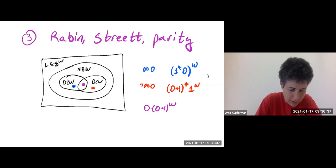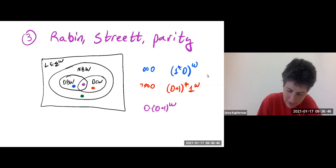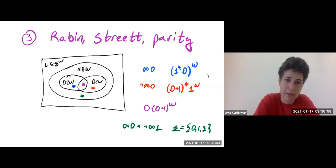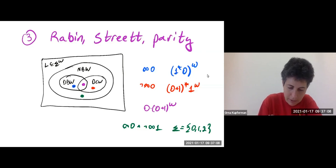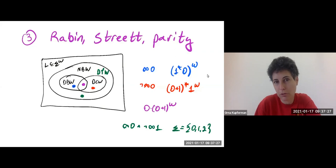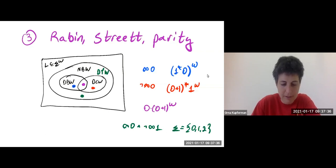Büchi and co-Büchi together do not cover everything. For example, taking the alphabet to be {0, 1, 2}, the language 'infinitely many zeros and not infinitely many ones' cannot be recognized by either a deterministic Büchi nor a deterministic co-Büchi word automaton. The conditions we will meet now — deterministic Rabin, Streett, or parity — will be able to recognize all omega-regular languages, as expressive as non-deterministic Büchi word automata. This also means there will be a determinization construction: we can take a non-deterministic Büchi word automaton and translate it to a deterministic Rabin, Streett, or parity automaton.